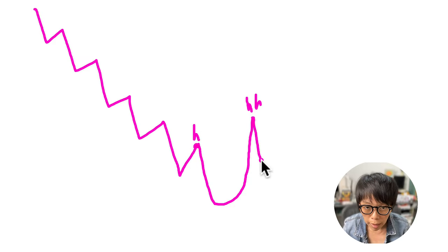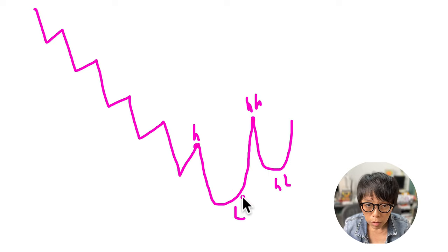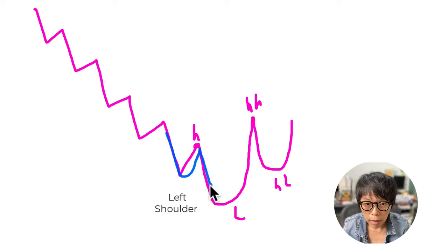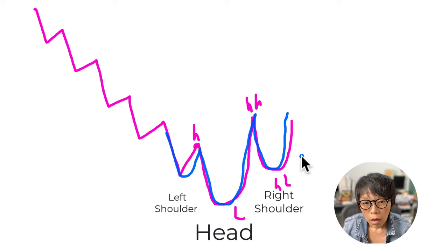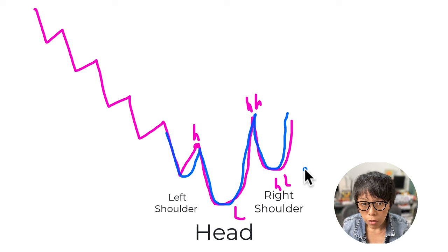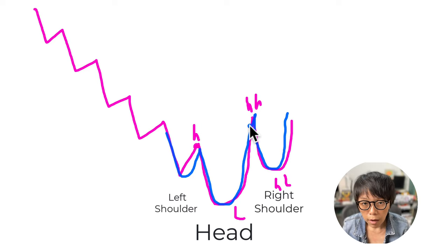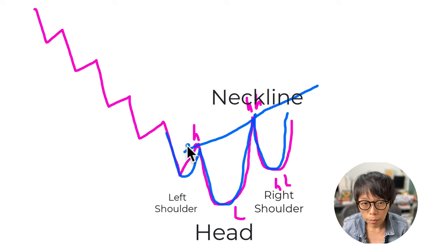When price moves down after the head, it shows a low that is higher than the previous low. So this forms the left shoulder, then the head, and then the right shoulder. There is a need for confirmation of this inverted head and shoulder pattern to confirm that price has reversed upwards — and that would be a break of its neckline. To draw the neckline, you connect the two highs.